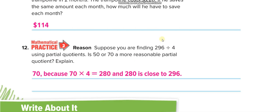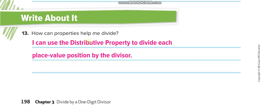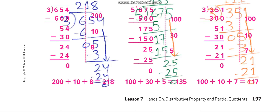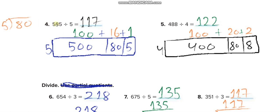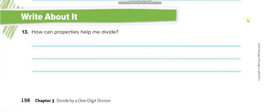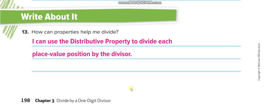Tell me in the comment box: what is the actual quotient when you divide 296 by 4? It's closer to 70. The last question: how can properties help me divide? I can use the distributive property to divide each place value position by the divisor. Like here — we break it into parts: 500, then 80, then 5, and divide by 5. I hope you understand the lesson. If you really understand, don't forget to like this video and subscribe to my channel, Learn Math with Mr. Saad. Thank you so much. Have a nice day.